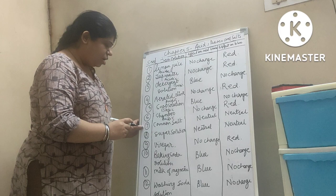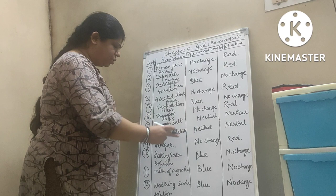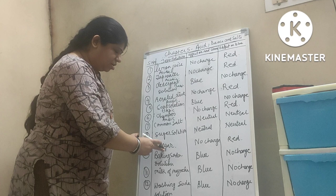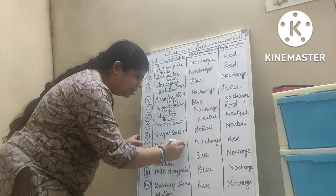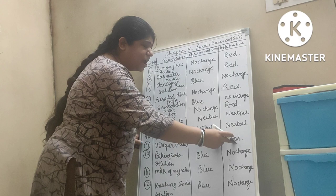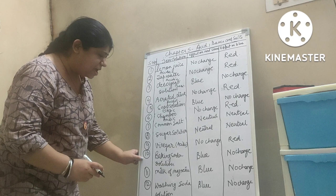Common salt — it is neutral, as we all know. Sugar solution is also neutral. Vinegar — we know vinegar is acidic in nature. There is no change in red litmus paper and blue litmus paper will turn into red.